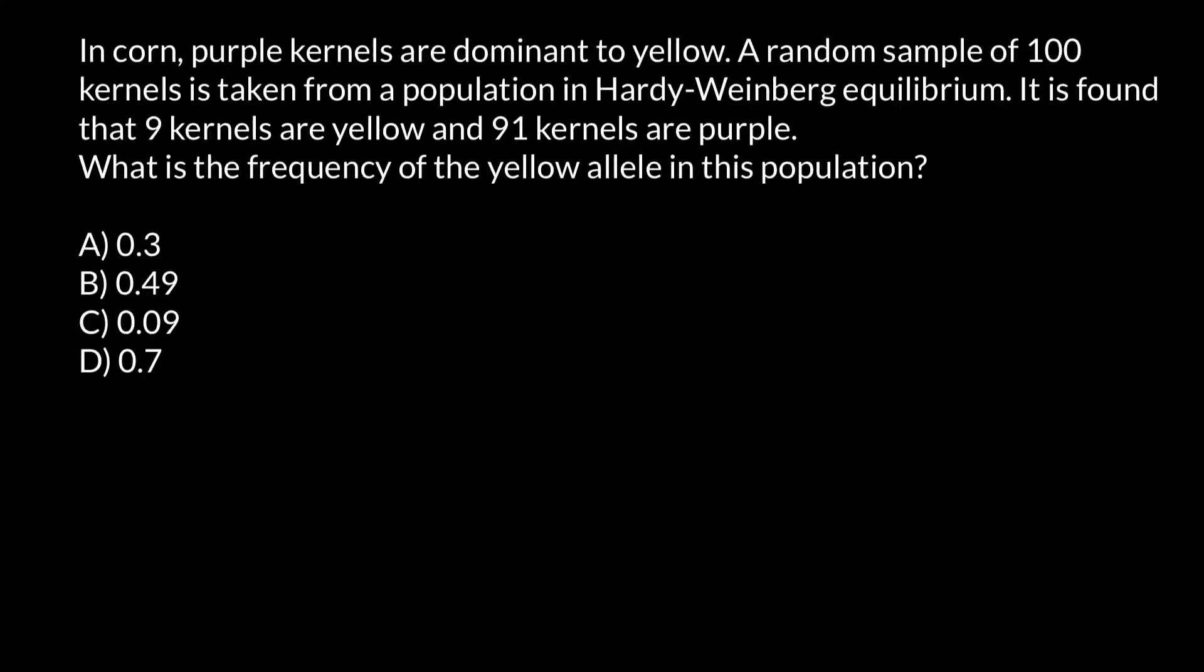Three genotypes we can get when we have two alleles for a certain locus. For example, it can be P for purple and allele Y for yellow color. And if we have in a population just these two alleles, these two alleles can produce the following genotypes.